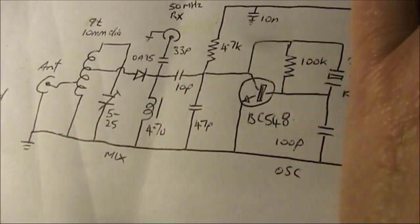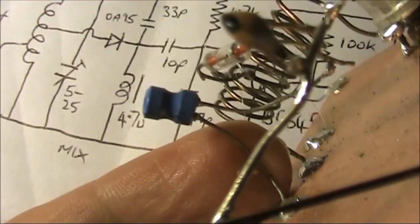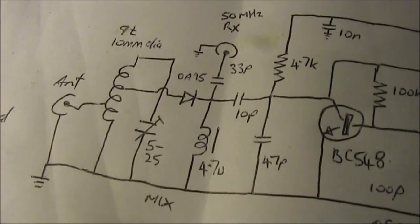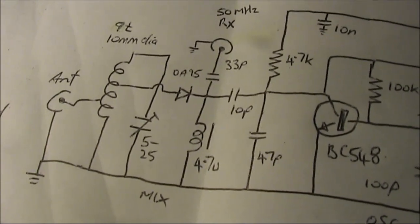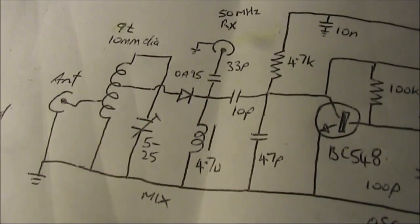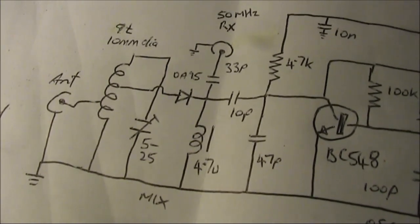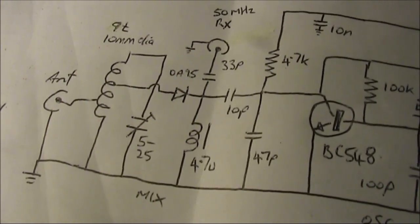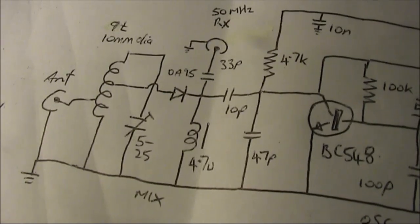I'll just give you a close up here. The front end here is a single tuned circuit. I've mentioned the Beehive trimmer before. That resonates with a coil, 9 turns on about 10mm diameter.